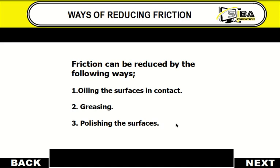This time we are looking at the ways of reducing friction. Friction can be reduced by the following ways, as you can see on the screen. One: oil the surfaces in contact. The friction between two surfaces can be reduced by applying oil at the two surfaces that are in contact. Two: greasing. We have a substance called grease, available in solid form and liquid form. You apply the grease at the two surfaces to reduce the frictional force.